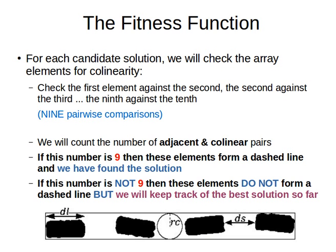In our case, here's what we're going to do, exactly the same as we did before for the binary representation problem that we had a look at in the previous videos. So, for each candidate solution, we will check the array elements for collinearity. The idea is as follows.